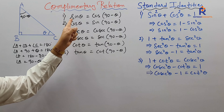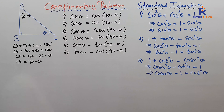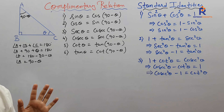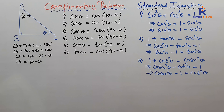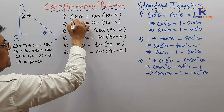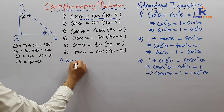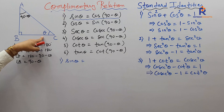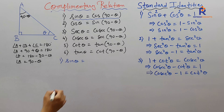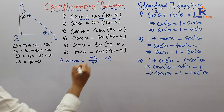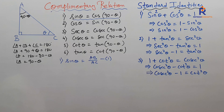Let's start. We are proving sine theta equals cos(90 minus theta). As per the definition, sine theta is opposite upon hypotenuse — opposite is AB, hypotenuse is AC. Let this be equation number one. Now what is cos(90 minus theta)?